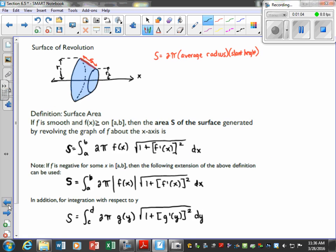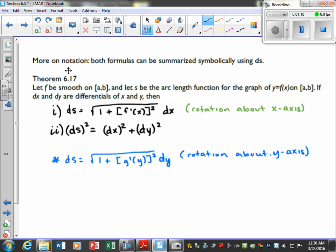And also, these were our given formulas, but sometimes there's more notation. Both formulas can be summarized symbolically using the ds, which is going to be our differentials of our arc length function, and this is in your theorem in your textbook.